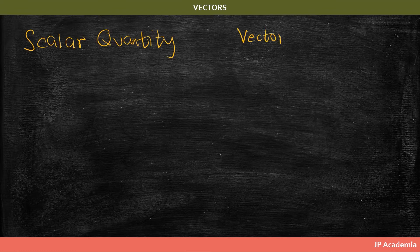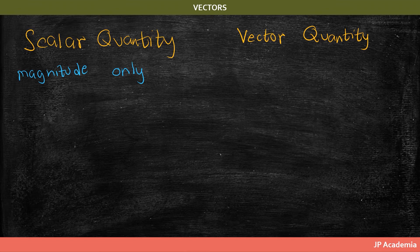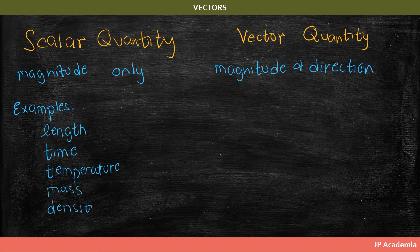In discussing vectors, we should start first by differentiating scalar quantity from vector quantity. A scalar quantity, or just a scalar, is described by magnitude only — it's just a single number. It does not require any direction to understand what it means. Examples of scalar quantities are the following physical quantities: length, time, temperature, mass, and density.